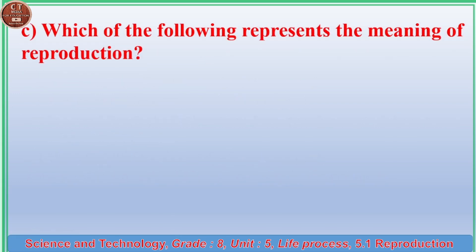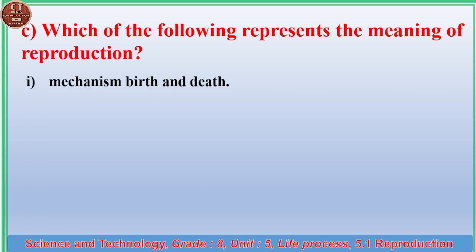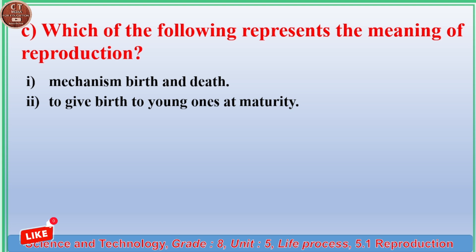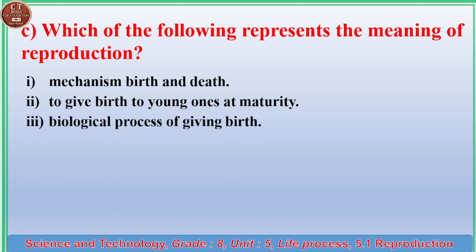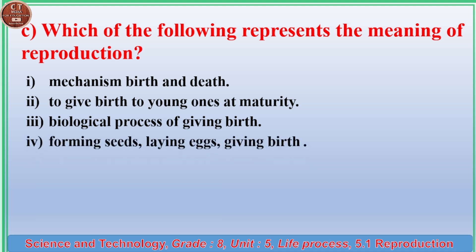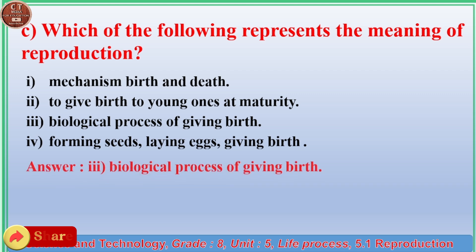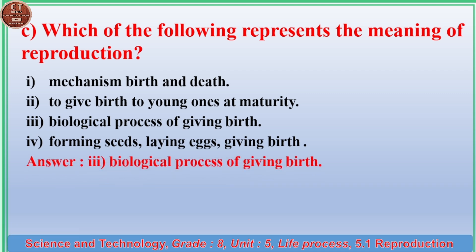(c) Which of the following represents the meaning of reproduction? (1) Mechanism of birth and death. (2) To give birth to young ones at maturity. (3) Biological process of giving birth. (4) Forming seeds, laying eggs, giving birth. Answer: (3) Biological process of giving birth.